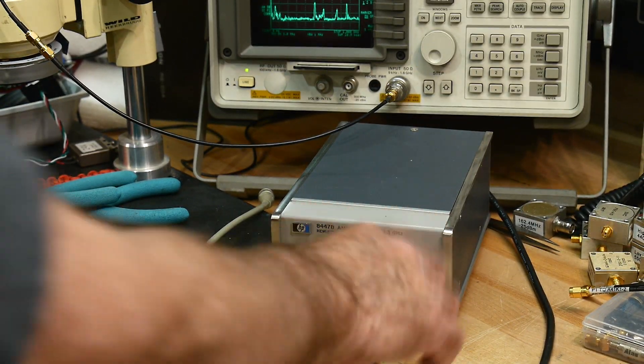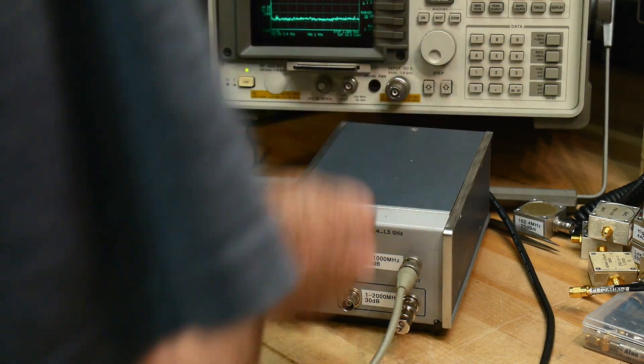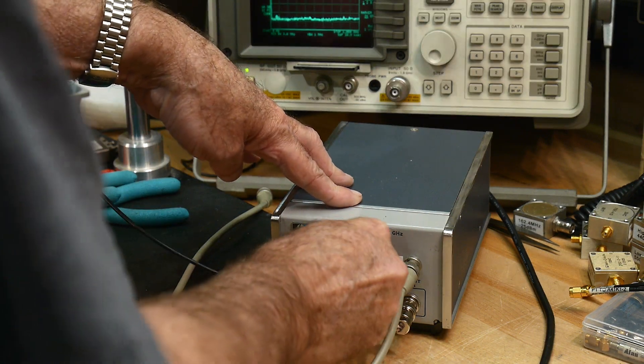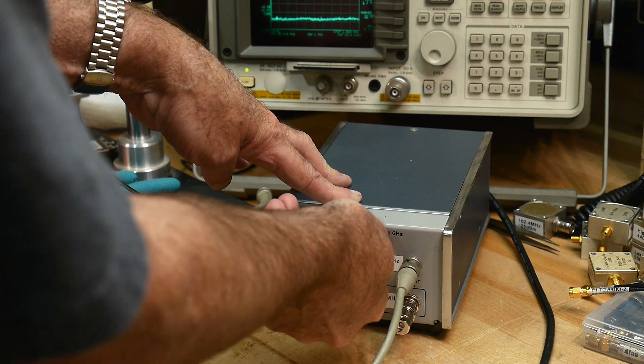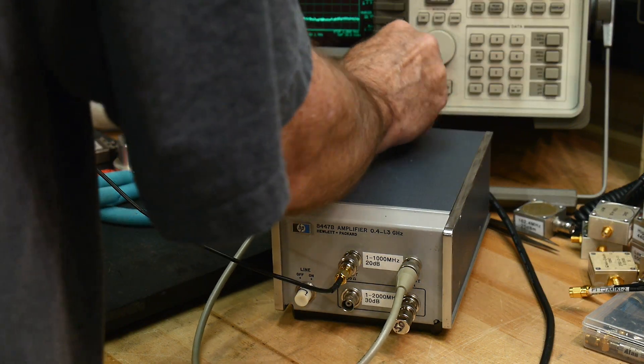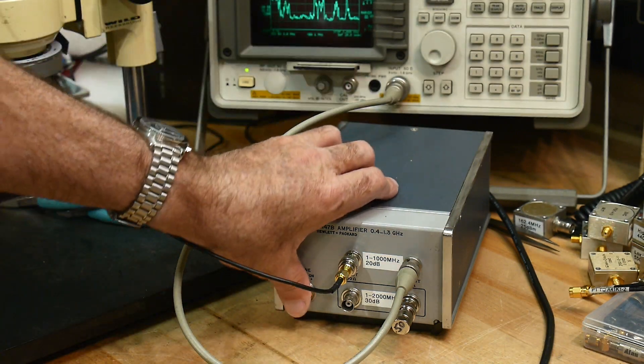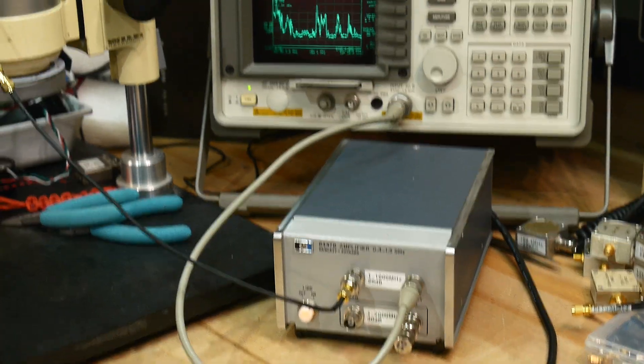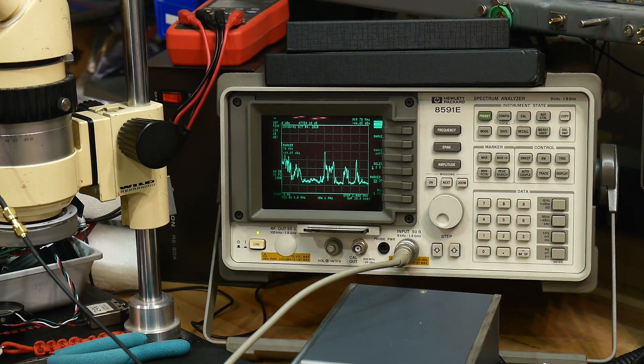Let's go ahead and hook up our amplifier. We'll take our antenna and put it on the input, take the output and put that back in the spectrum analyzer. Let's turn it on. Poof! Everything got much bigger.